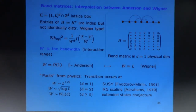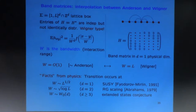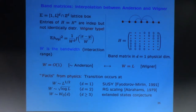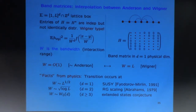The basic question for random band matrices is where the transition happens. The Anderson model, at least in one dimension, is always localized — the insulator regime — while the Wigner matrix is in the delocalized regime. So as you change the parameter W from 1 to L, somewhere in between there should be a transition going from insulator to conductor. Physical facts, proven in the physics sense though not rigorous, say that in one dimension the transition happens halfway, so at W of order square root of L. In higher dimensions there are different transition points, all well explained in physics language.